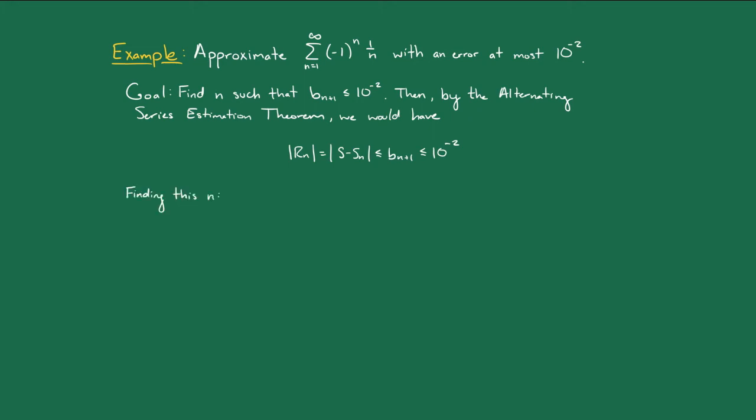Now, let's find this n. We set bn plus 1 less than or equal to 10 to the minus 2, and we solve for n to get that n is greater than or equal to 99. So, let's take n as equal to 99. Then, just like we showed above, we have that the error in approximating the sum s by the 99th partial sum is less than or equal to 10 to the minus 2.